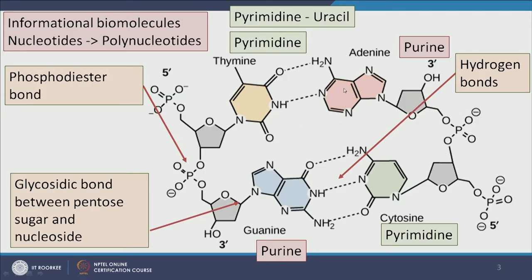Among ATGC, thymine and cytosine are pyrimidines — they both have a single aromatic ring. Guanine and adenine are called purines and they have two aromatic rings. Thymine is attached to the sugar and phosphate via a phosphodiester bond — this is a pentose sugar. The pentose sugar and nucleoside are attached by a glycosidic bond, and the two strands are connected by hydrogen bonds. There are three different bonds you must be aware of: glycosidic, phosphodiester, and hydrogen bonds.